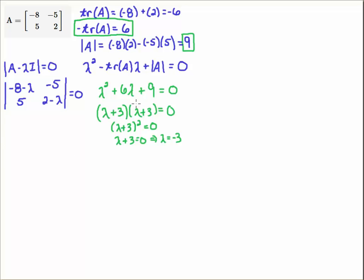So I factor this characteristic equation. I get lambda plus 3 quantity squared equals 0. So that means that lambda equals minus 3 is the eigenvalue. Notice you only have one eigenvalue, not 2.